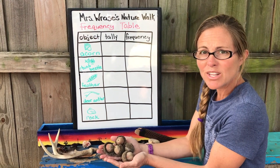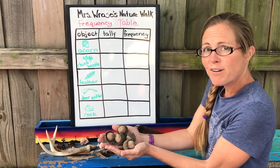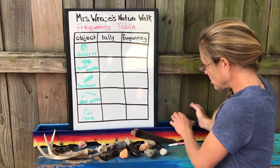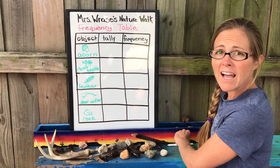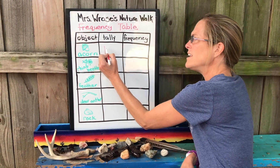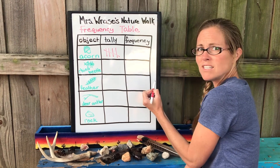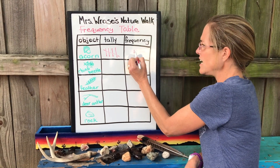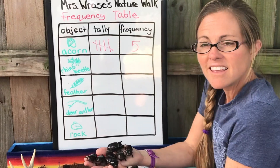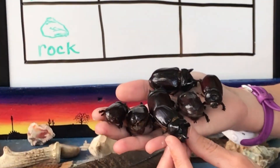Let's first take a look at our acorns. We have five acorns in all, so let's show five acorns. One, two, three, four — five is our slash — and five is our frequency.